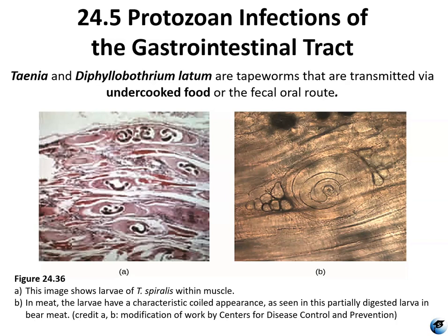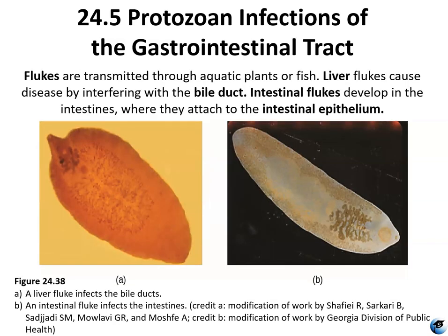Figure 24.36 shows tapeworms, which come from undercooked food — usually undercooked meat — and also can be acquired via fecal-oral transmission from contaminated water. The figure shows tapeworms found within smooth muscle cells on the left, and on the right a tapeworm wrapped and spiraled around itself in meat, with a coiled appearance typical of tapeworm larvae. Fluke worms are transmitted through aquatic plants or fish. Liver flukes interfere with the bile ducts, and intestinal flukes attach to the intestinal epithelium. Figure 24.38 shows a liver fluke infecting the bile ducts and an intestinal fluke.